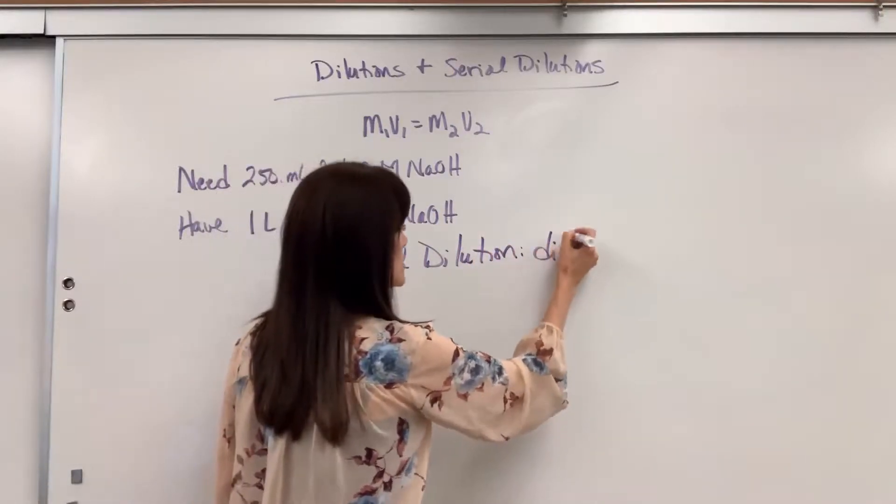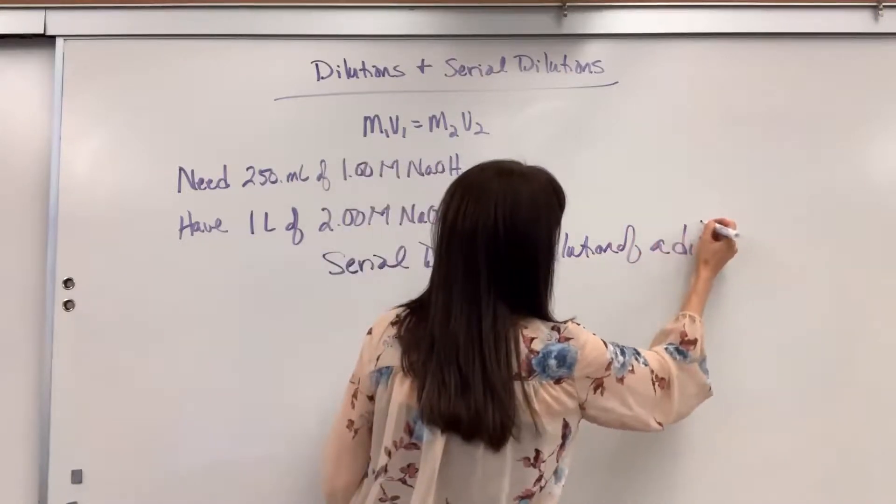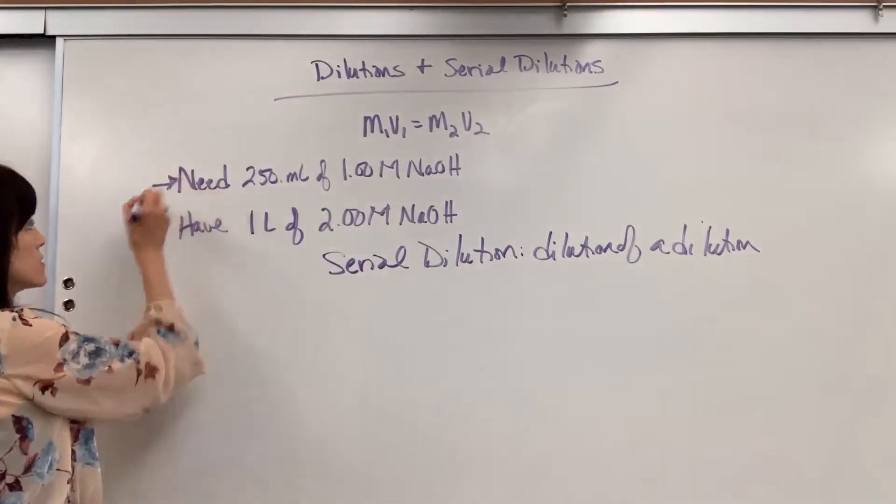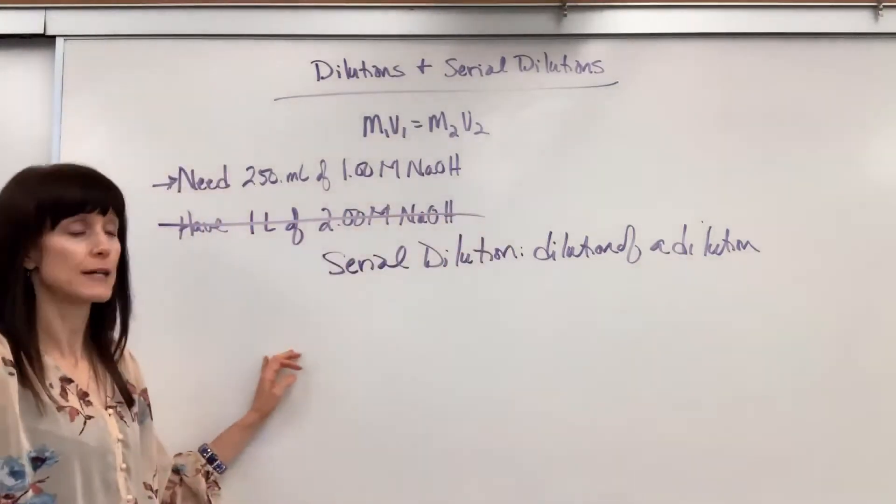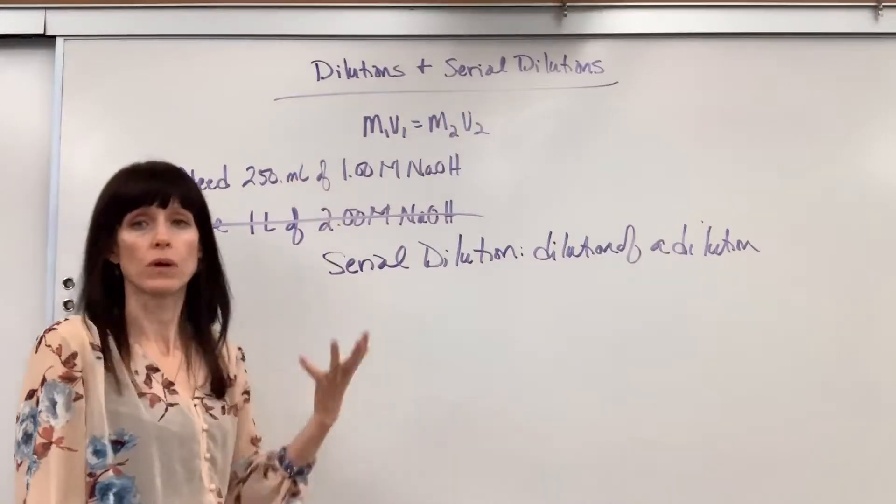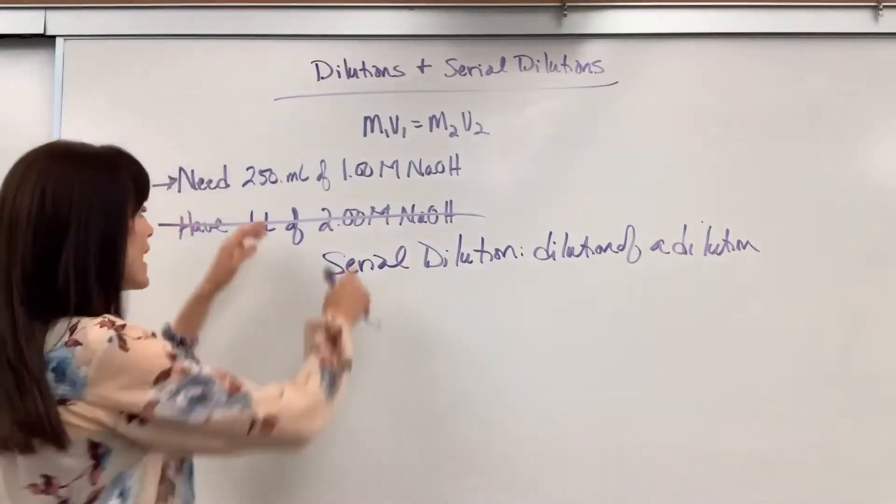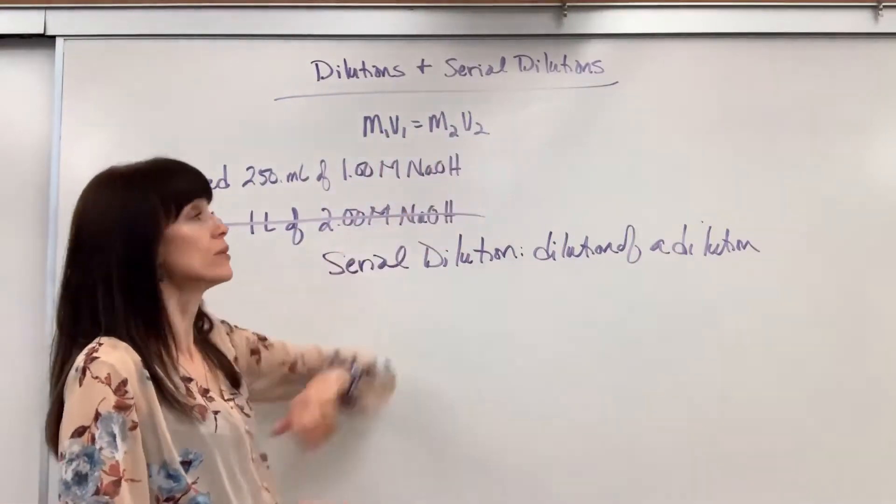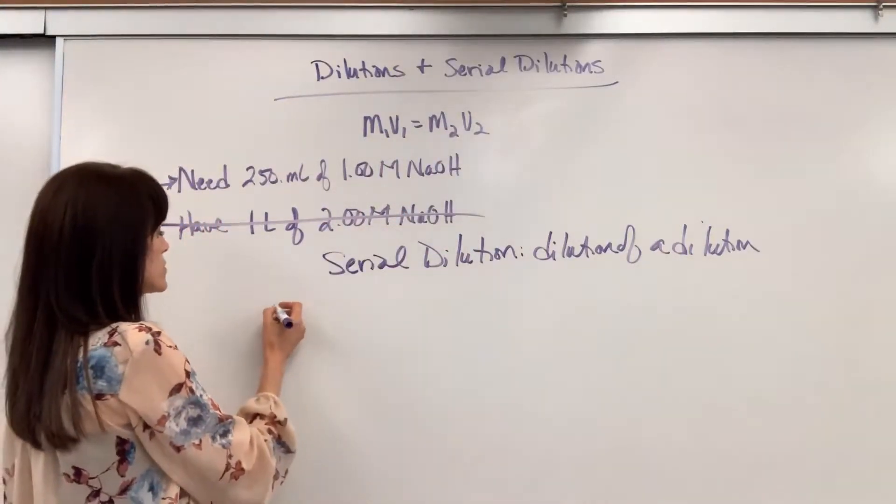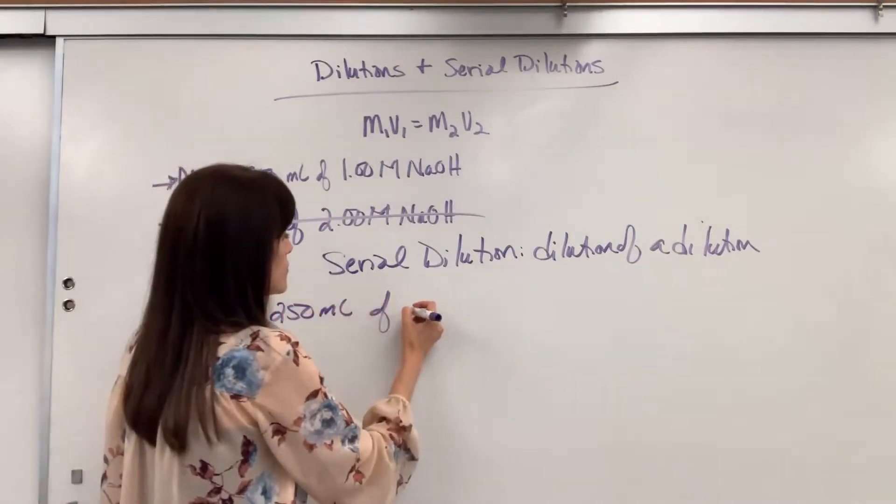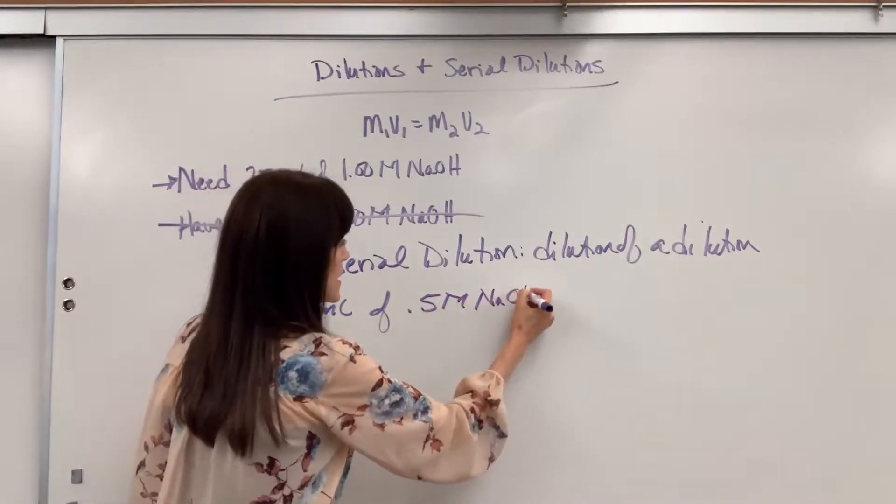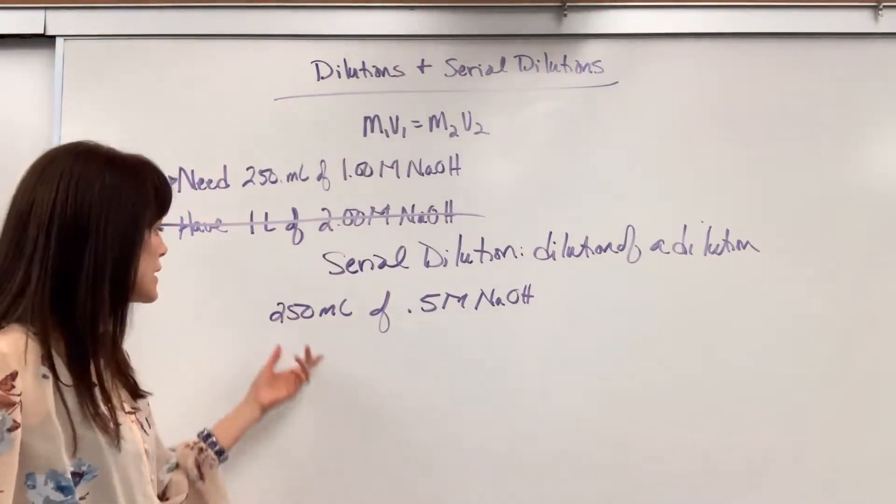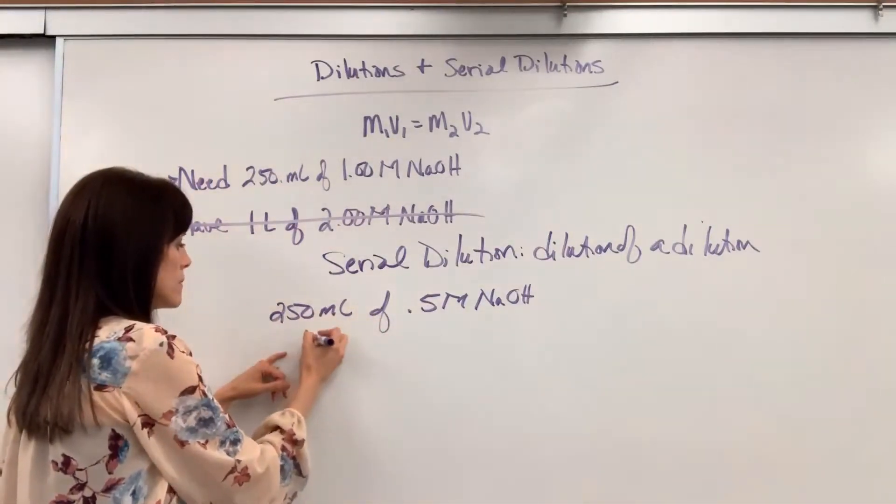So we did a dilution right here. This would be my first dilution. I don't need that anymore. I'm done with that. I have now 250 mils of a one molar sodium hydroxide. So a serial dilution would mean I take this, and that becomes my new. That becomes the M1 and the V1, and I want a new concentration. Let's say that I want 250 mils of a 0.5 molar sodium hydroxide. I mean, you could get down to really small like 0.005 molar. Wow, super tiny. So this would be my volume.